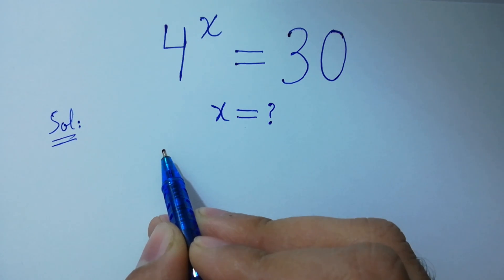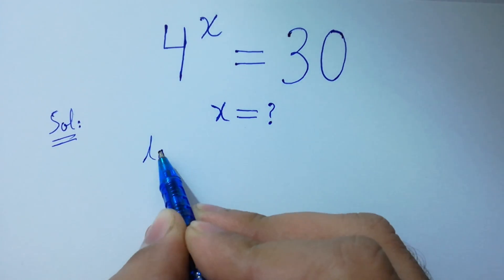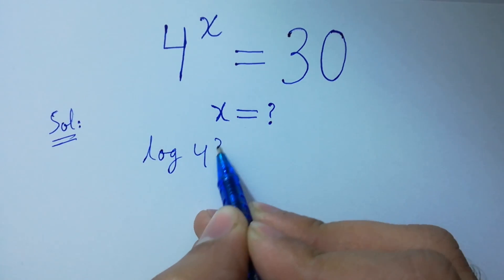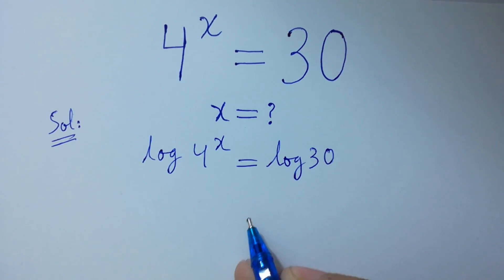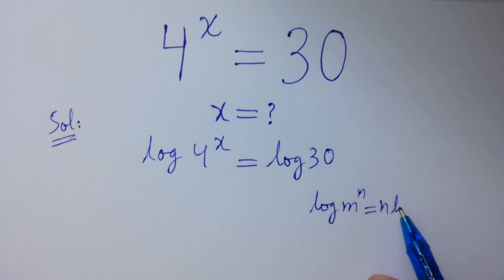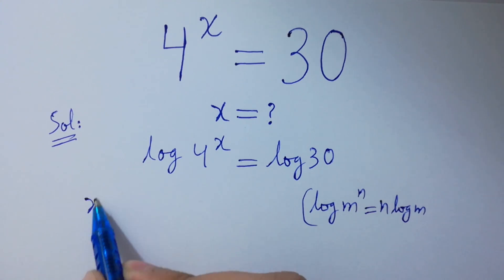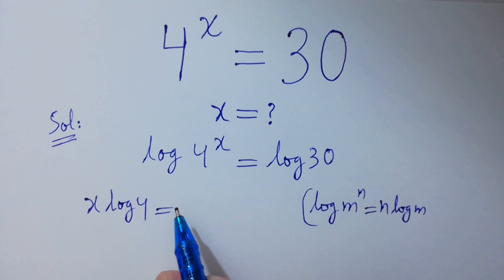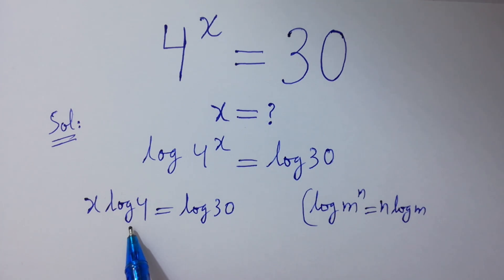To solve this, first of all take log on both sides: log 4 to the power x equals log 30. Since log m to the power n equals n log m, it will be x log 4 equals log 30. To get rid of log 4, divide by log 4 on both sides.